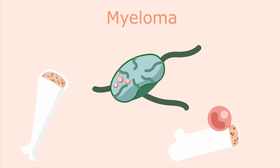So the difference between leukemia and myeloma is that the plasma cell has once already left the bone marrow and then come back again. It's when it has returned to the bone marrow that it becomes malignant — and that's when we have a myeloma.